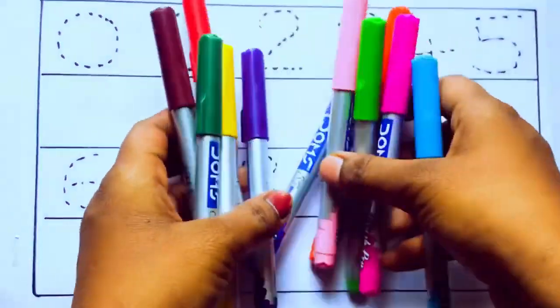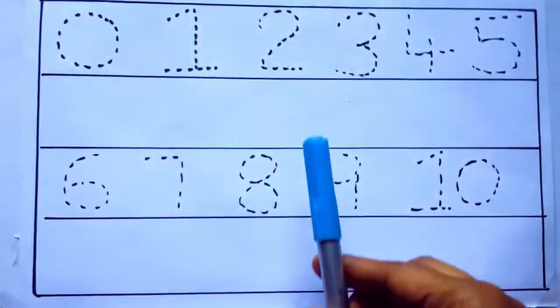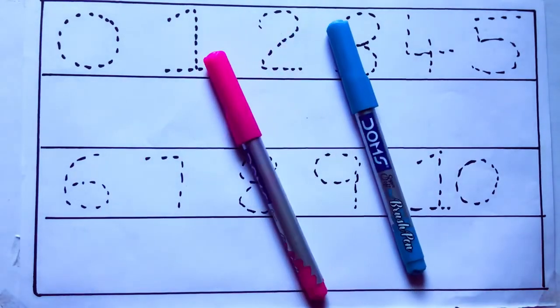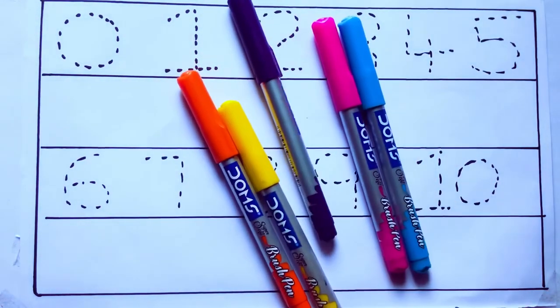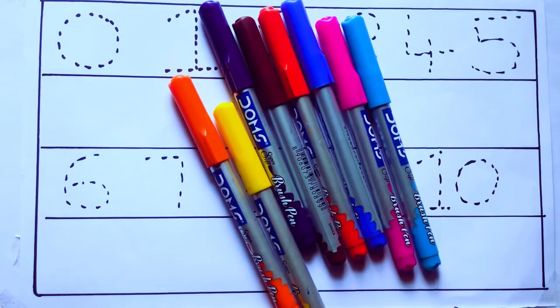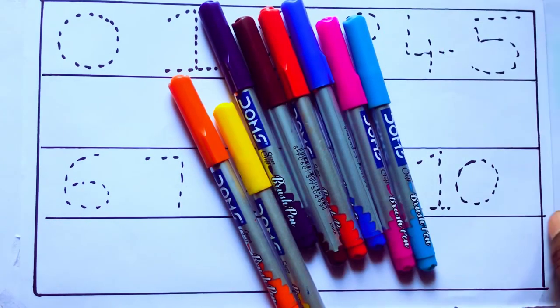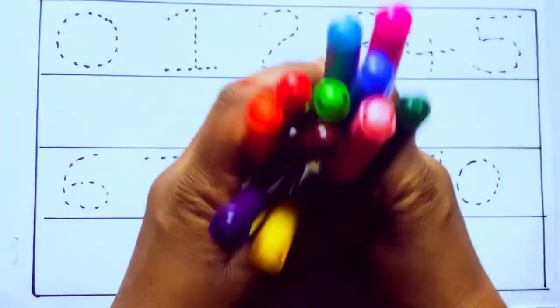Let's learn some colors. These are all the color pencils. Let's learn the names. Sky blue color, pink color, yellow color, orange color, violet color, blue color, brown color, red color, green color, and pink color.